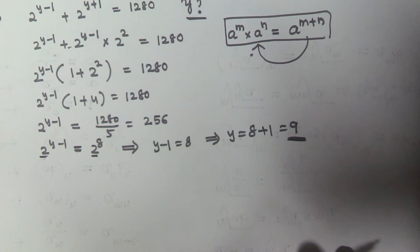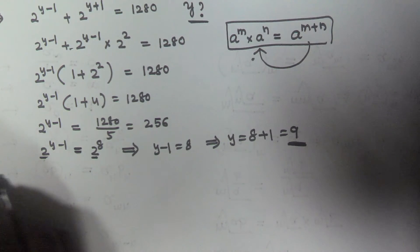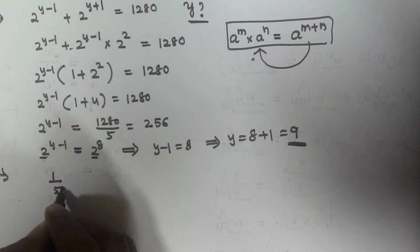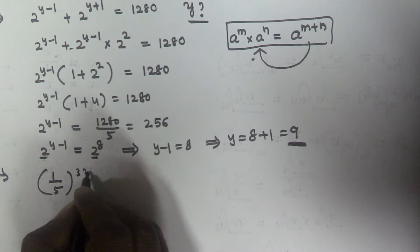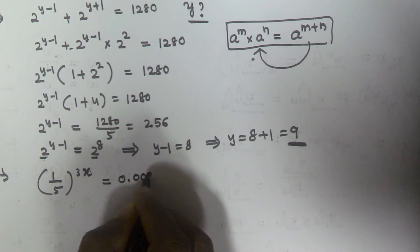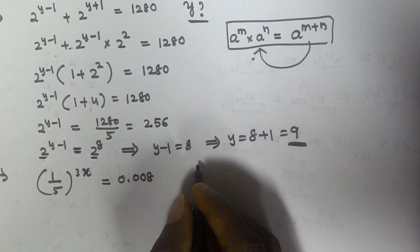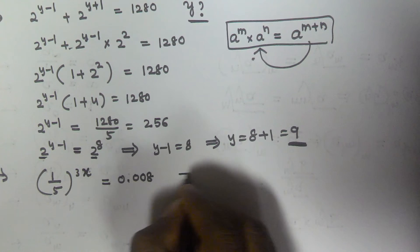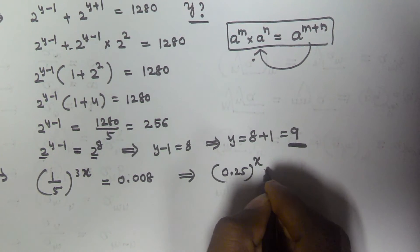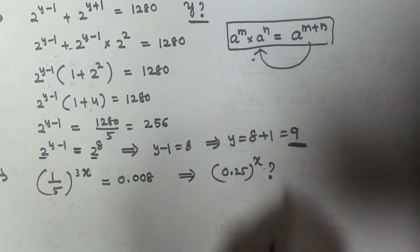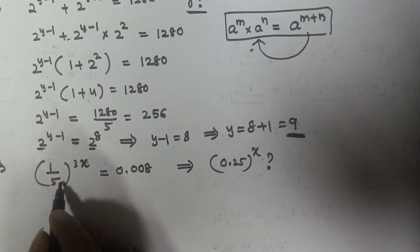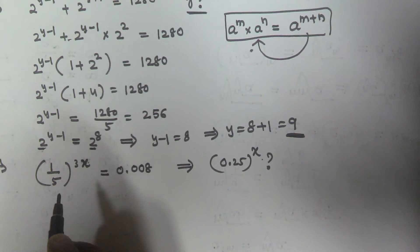Let's see another example. If (1/5)^(3x) equals 0.008, then we have to find the value of 0.25 to the power of x. We are given that (1/5)^(3x) equals 0.008.